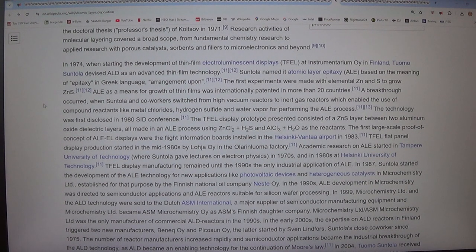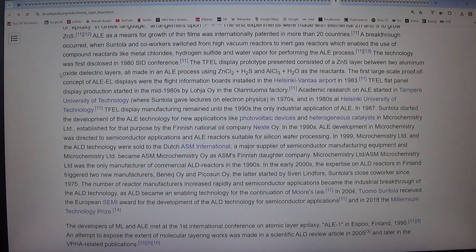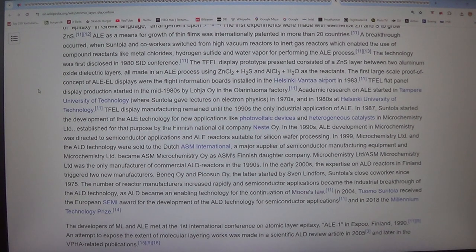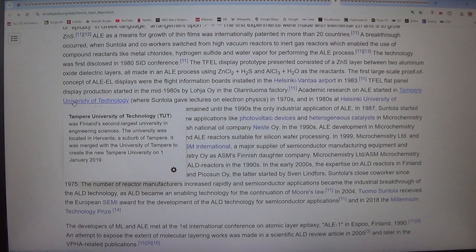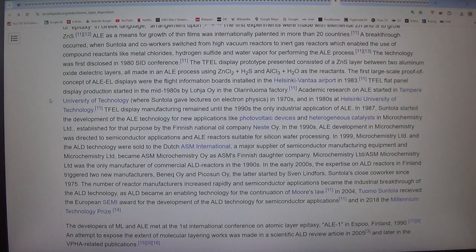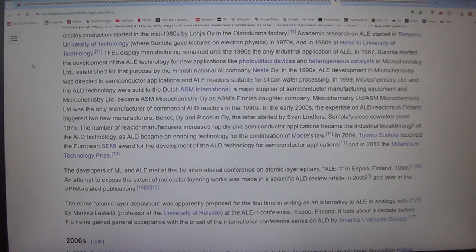The technology was first disclosed in 1980 SID conference. The full display prototype presented consisted of a ZNS layer between two aluminum oxide dielectric layers, all made in an ALE process using ZNCl2 plus H2S and AlCl3 plus H2O as the reactants. The first large scale proof of concept of ALE displays were the flight information boards installed in the Helsinki Vanta airport in 1983. Full flat panel display production started in the mid 1980s. Academic research on ALE started in Tampere University of Technology. Full display manufacturing remained until the 1990s the only industrial application of ALE.